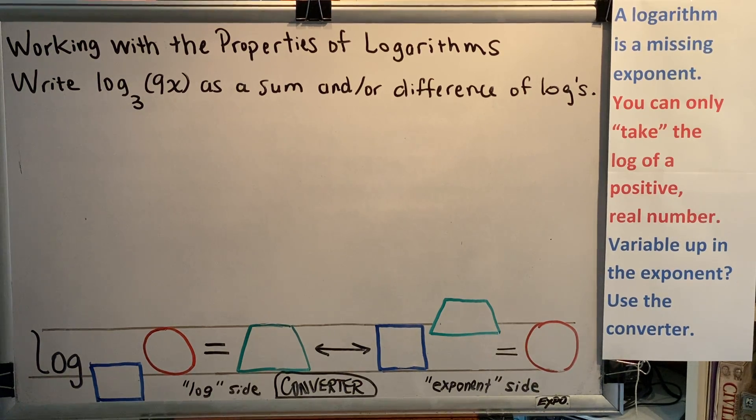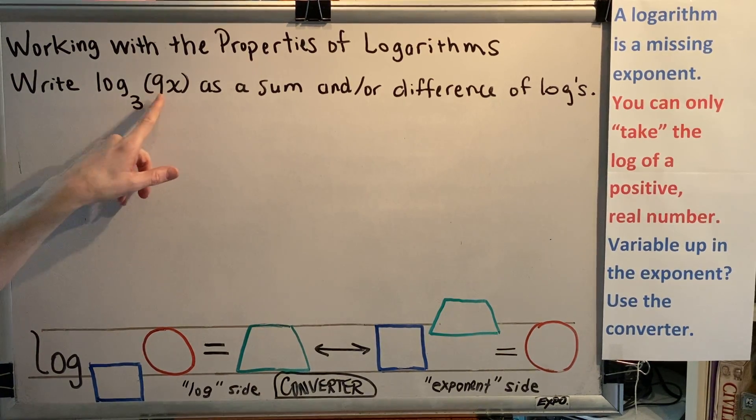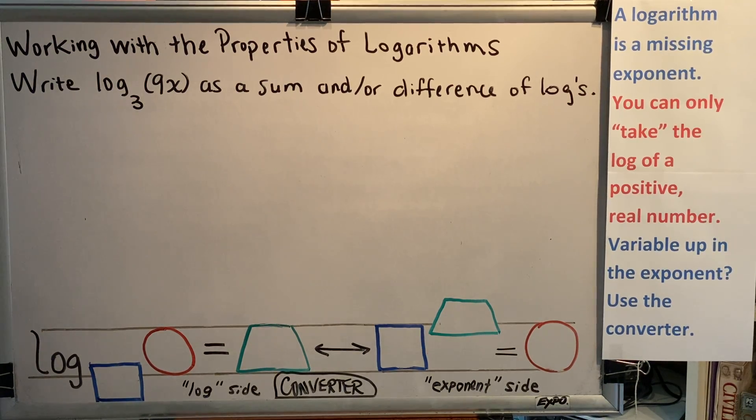When we look at the left-hand side of those two rules, we see that for rule 6, it starts with log base a of two things being multiplied. And for rule 7, it starts with log base a of two things being divided. So, which one of those most closely resembles our problem? If we look carefully, we see that in our problem, we're taking the log of two things that are being multiplied. And for that reason, we will use rule 6 to answer this question.